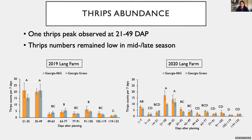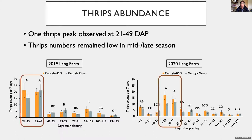Moving on to the results. For thrips abundance, we found only one thrips peak in the early season at around 21 to 49 days after planting, which varied slightly across trials. But for all trials, thrips numbers remained low after that early-season peak.